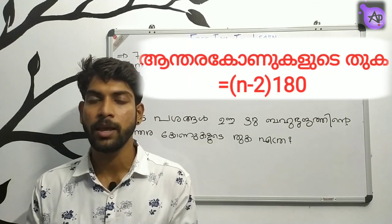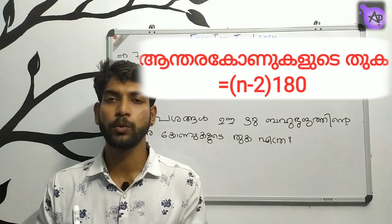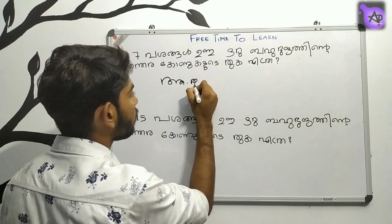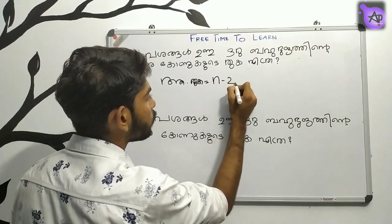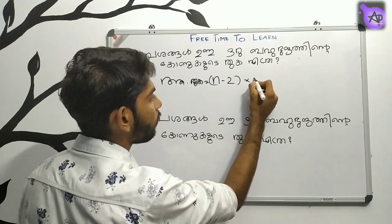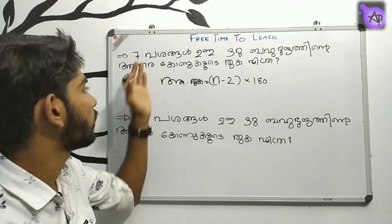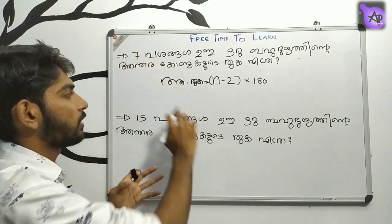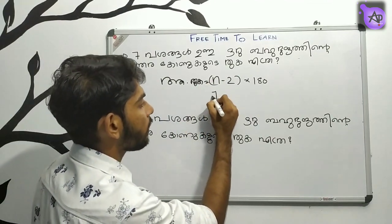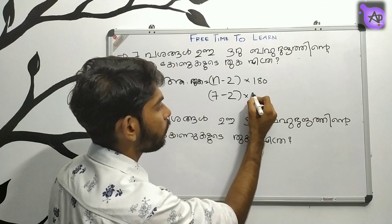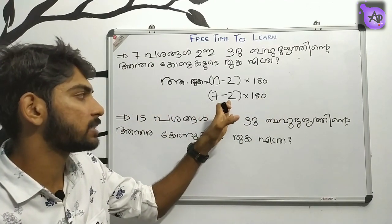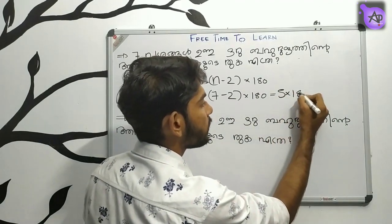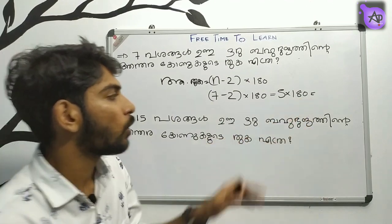We have another equation: the interior angle sum equals (n minus 2) into 180. Let's apply this equation. If n is equal to 8, we apply: 8 minus 2 into 180. 8 minus 2 is 6. 6 into 180 gives us another answer.